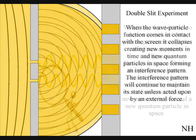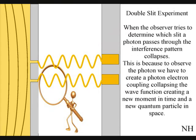When the observer turns on a detector to determine which slit a photon passes through, the interference pattern collapses. This is because to observe a photon, we have to create a photon-electron coupling, collapsing each wavefront into a quantum particle that will have its own position in space and time.